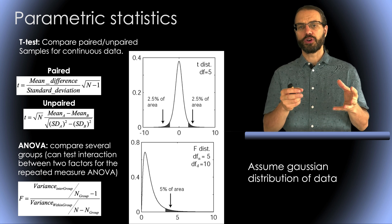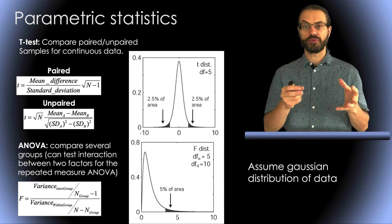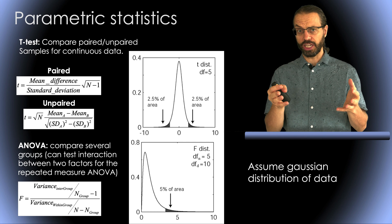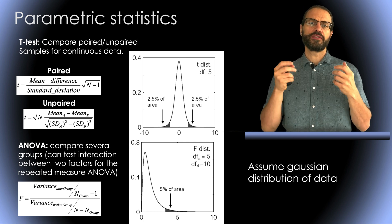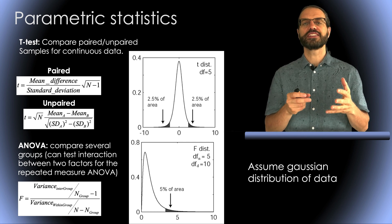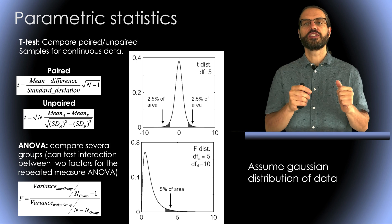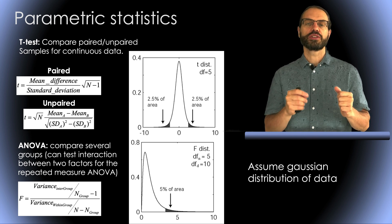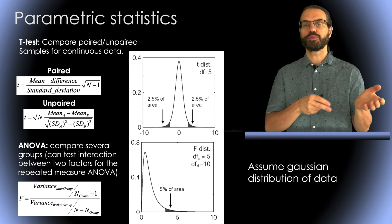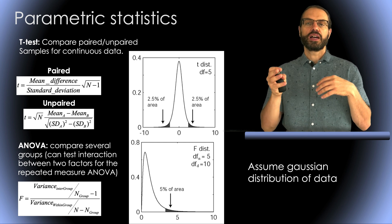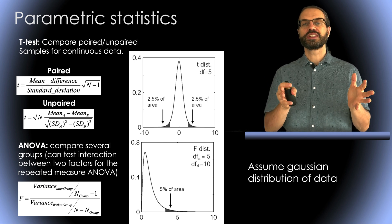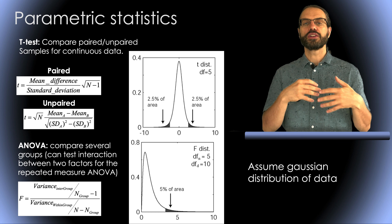There are formulas for unpaired data, such as two groups of participants randomly sampled in a population. We also have a different formula for paired data, such as different conditions for the same participants. We can also calculate ANOVA based on the same principle when we have more than two groups of participants or more than two conditions.